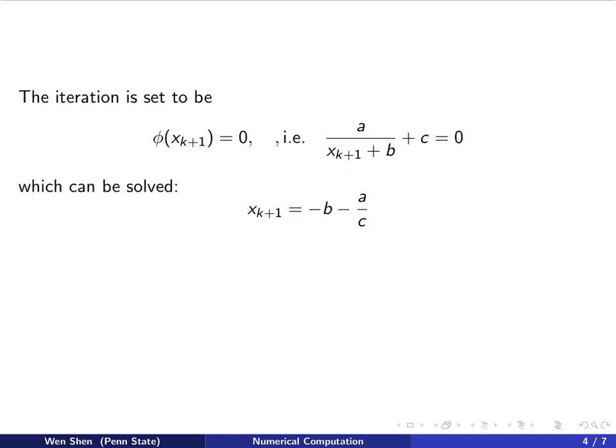Now that is a rather simple task. It gives us this expression. xₖ₊₁ will simply be negative b minus a over c.